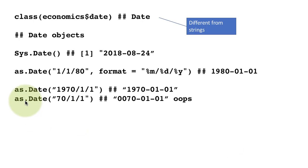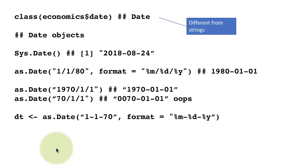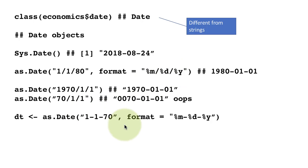Interestingly, if you do as.Date('7011'), you're converting the year 7011, and the system treats it as AD 70, not AD 1970. So when using the default, you need to be sure to give all four digits of the year. You could do as.Date('1-1-70') with format '%m-%d-%Y' — whatever separator is in the format string must match your original string.